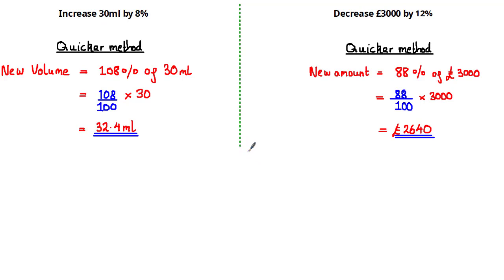In a previous tutorial we saw how to increase an amount by a certain percentage. In the first example we were told to increase 30 millilitres by 8%. Now, 30 millilitres would be equivalent to 100%, so to increase by 8% we would need to take 108% of 30 millilitres. We got 108% by adding 100% to 8%.